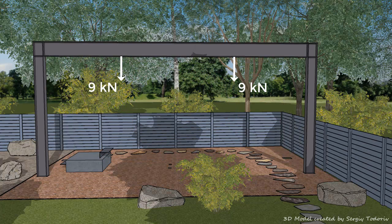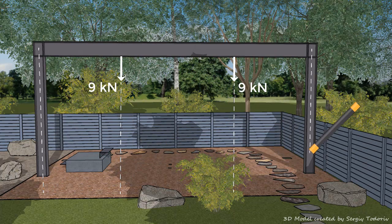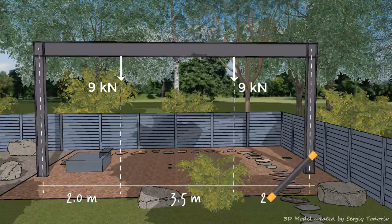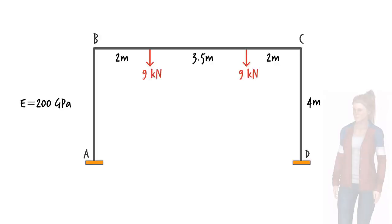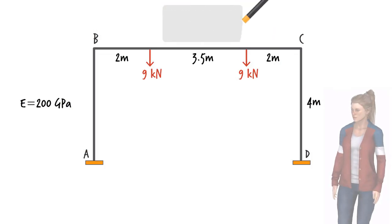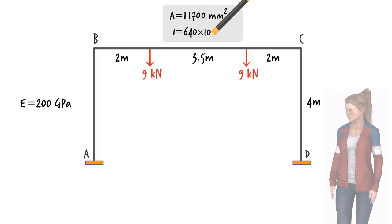Here, we wish to analyze one of the frames. For our purposes, the key dimensions are shown. The frame is considered fixed at the base. The section properties for the beam and the columns are as follows.